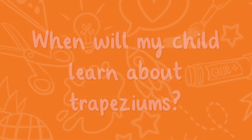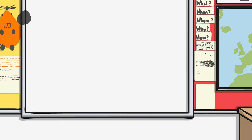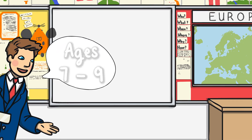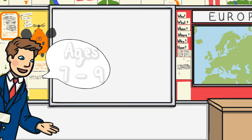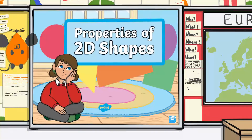When will my child learn about trapeziums? Your child will find out more about trapeziums and trapezoids in Lower Key Stage 2, ages 7 to 9, when learning about the properties of 2D shapes.